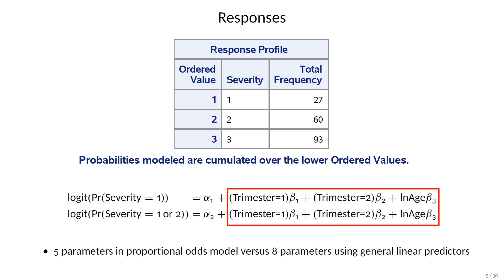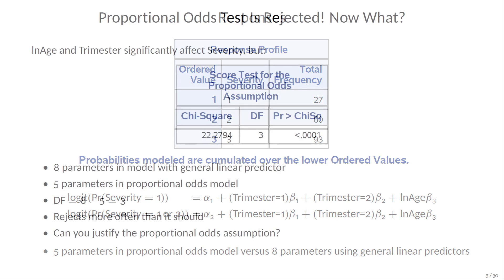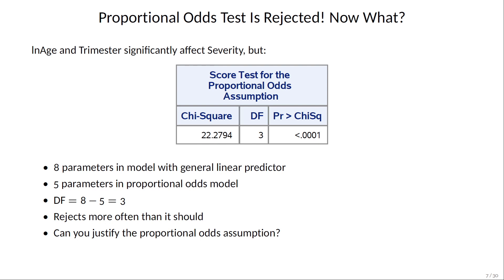beta1, beta2, and beta3, that are shared between the two response functions. With a general linear predictor, we would have two complete sets of slopes for a total of eight parameters. But PROC LOGISTIC tests the proportional odds assumption and rejects the null that the proportional odds model is adequate as compared to the more general model with eight parameters.